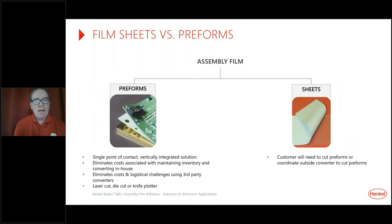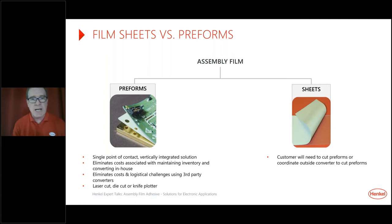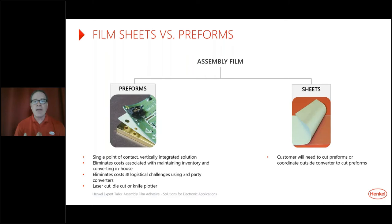We make the films in rolls, cut sheets of different sizes — 12 inches by 12 inches, for example — and we can sell sheets to you. The majority of the time we will cut preforms. A preform will exactly match whatever design you provide us — it will exactly match your circuit board with the proper shape and cutouts, as shown in the picture. The point is it exactly matches your design and adds the most value for you. A custom cut preform eliminates the cost and logistical challenges of cutting your own preforms and minimizes waste.